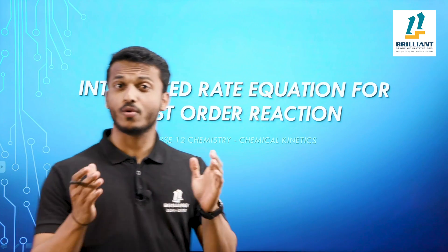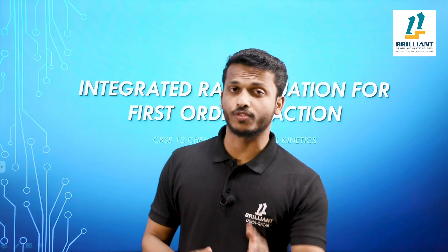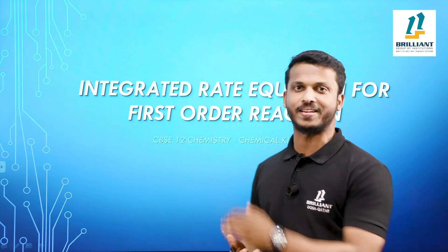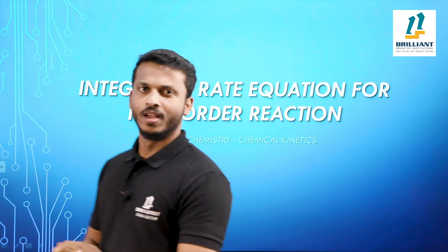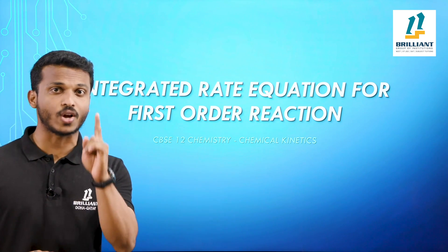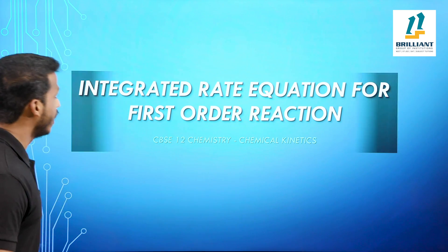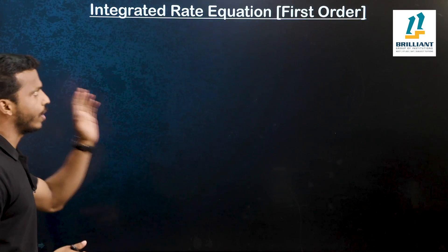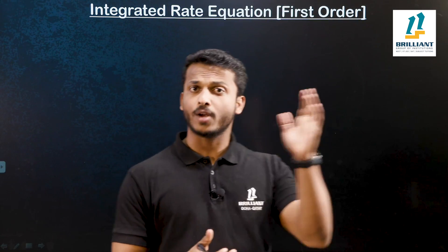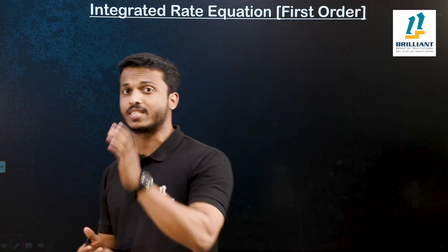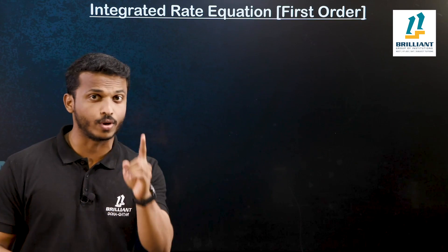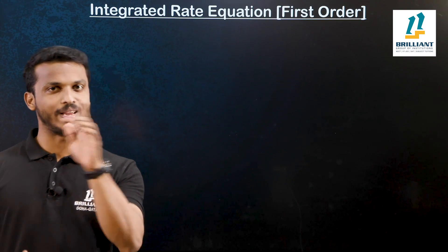Hi everyone. Here we are going to discuss one of the most important derivations from the chapter chemical kinetics from grade 12. It is the integrated rate equation for first order reaction. In the part 1 video, we already discussed the integrated rate equation for zero order reaction. Here we are going to discuss about first order reaction.